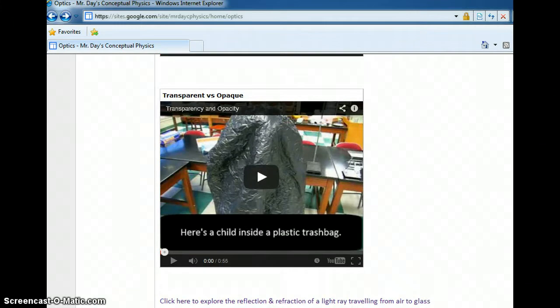Transparency versus opacity. A transparent material is a material that allows visible light to pass through it. Opacity or an opaque material does not allow light to pass through. An example of the transparent material is the ground glass in the lens. The light will pass through it. So different materials will have different properties of transparency and opacity.